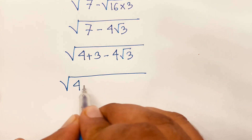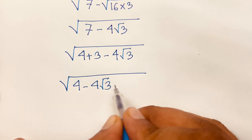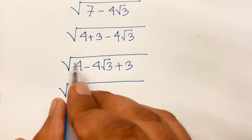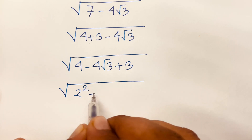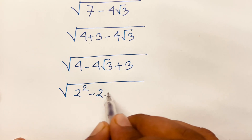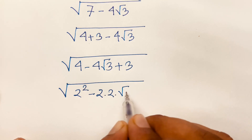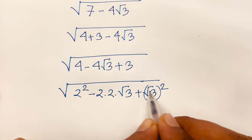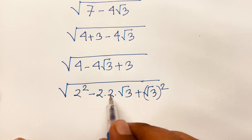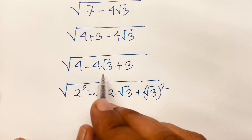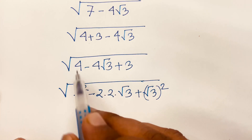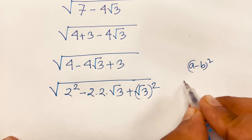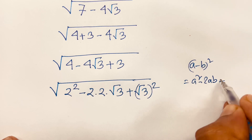Rearranging: √(4 minus 4√3 plus 3). Notice that 4 is 2², and we have minus 2 times 2 times √3, plus (√3)². So this matches the pattern a² minus 2ab plus b².